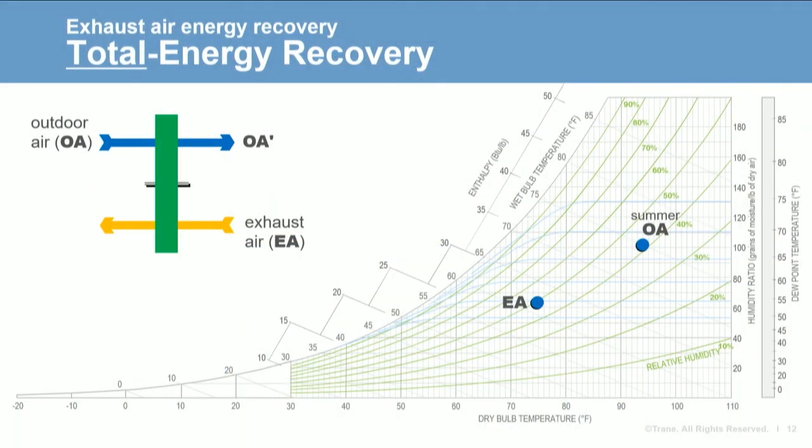Now let's compare that with a total energy recovery device operating at the same conditions. When it's hot and humid outside, total energy recovery transfers sensible heat cooling the outdoor air, but also transfers water vapor from the humid outdoor air to the drier exhaust airstream, drying the entering air. The result is that total energy recovery lowers the enthalpy of the entering air much more than sensible recovery alone, resulting in a greater reduction in cooling load in humid climates.